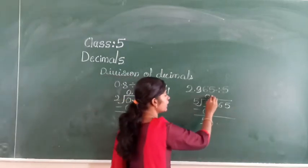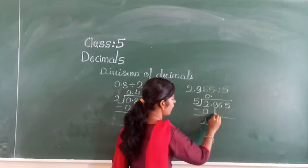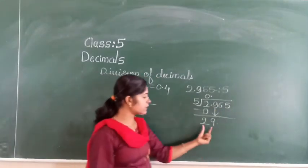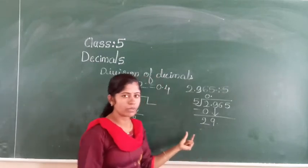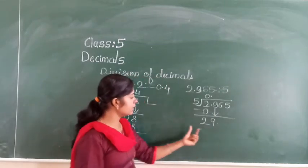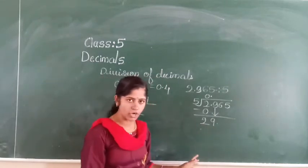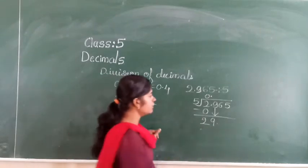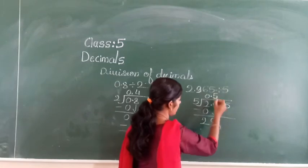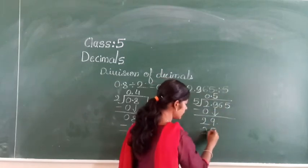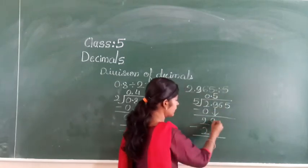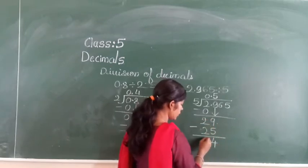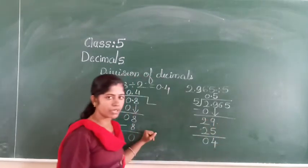For the digits after the point, you need to give a point here, then take the digit down. Now we have 29. In the 5 times table, 29 is not there. The nearest smaller value is 5 fives are 25. So take 5 fives are 25. Then 29 minus 25 is 4. I hope you are getting my point — when you are taking digits after the decimal point, you must give the point here.